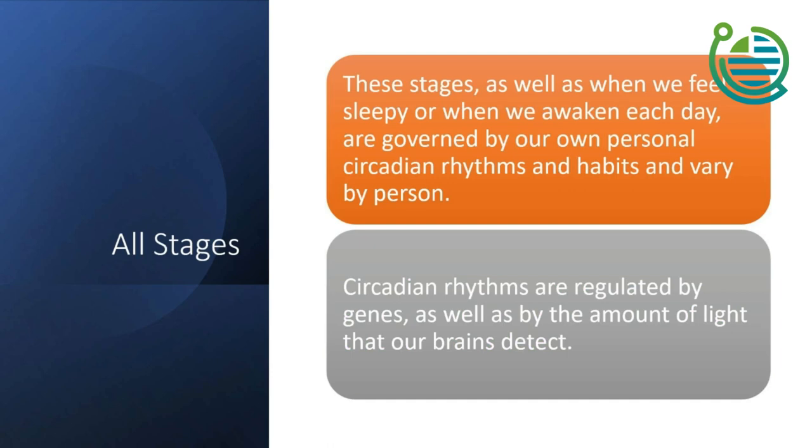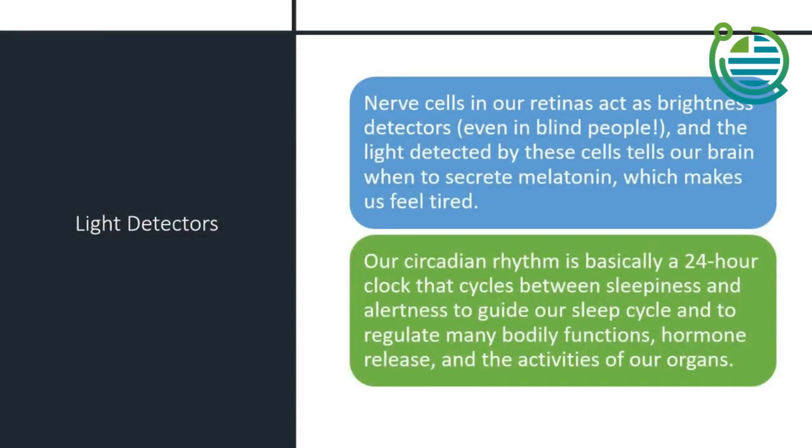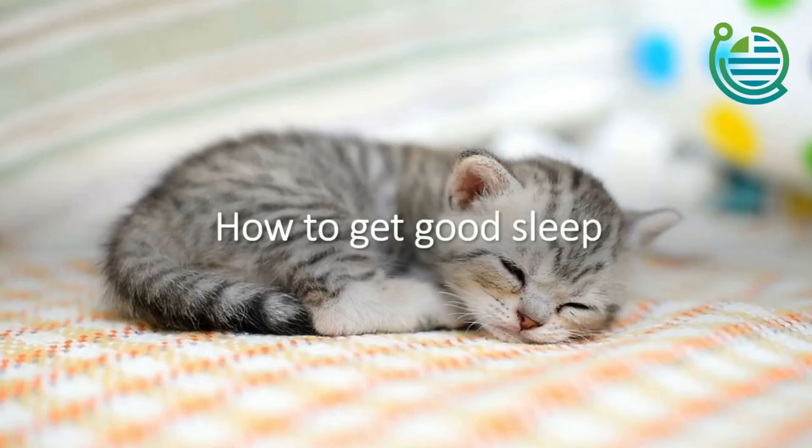It's pretty normal to waken a few times at night and sleep can be sufficient if those periods are short. But if our sleep is restricted in length or fragmented in schedule, our bodies do not benefit from four to five cycles through the sleep stage. When we feel sleepier when awakening each day, it's governed by our personal circadian rhythm and habits. Those circadian rhythms are regulated by your genes as well as the amount of light our brains detect. This is why it's so important - I talk about this all the time - you want to get to a sleep sanctuary where there's no LED light, no red alarm clock light, no light coming off the TV, no light coming off of your iPad or tablet or smartphone. The nerve receptors in our eyes that act on brightness function even in blind people. They're detected by the cells which goes to the pineal gland which secretes melatonin.